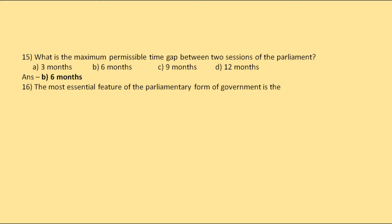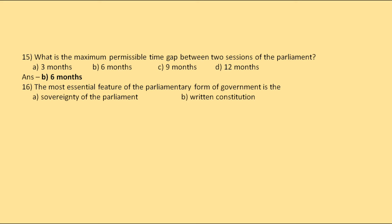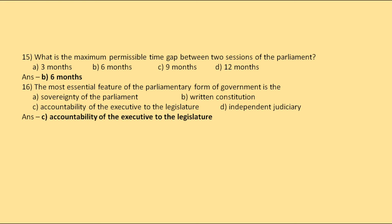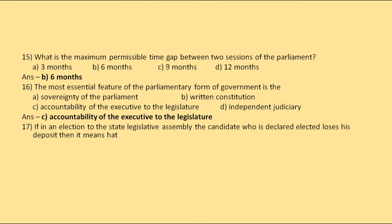The most essential feature of the parliamentary form of government is which of the following? The options are sovereignty of Parliament, written constitution, accountability of the executive to the legislature, or independent judiciary. The correct answer is accountability of the executive to the legislature.